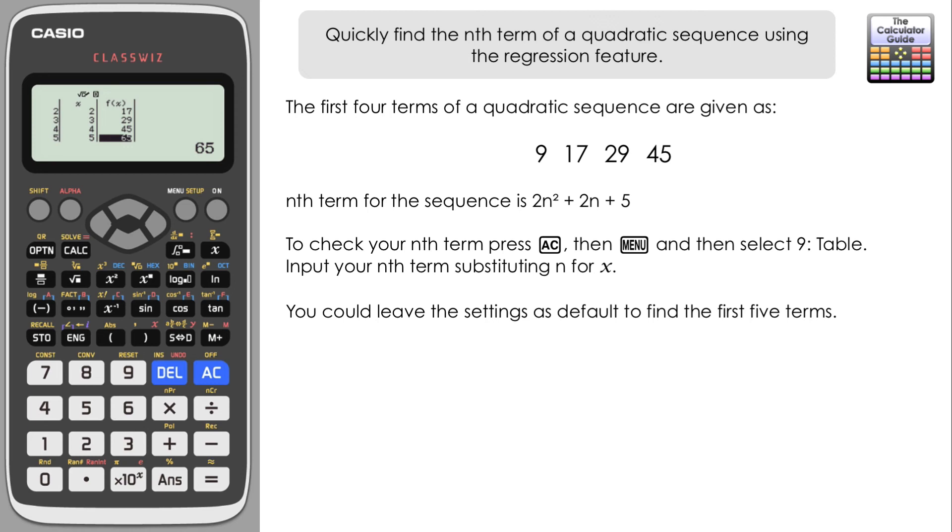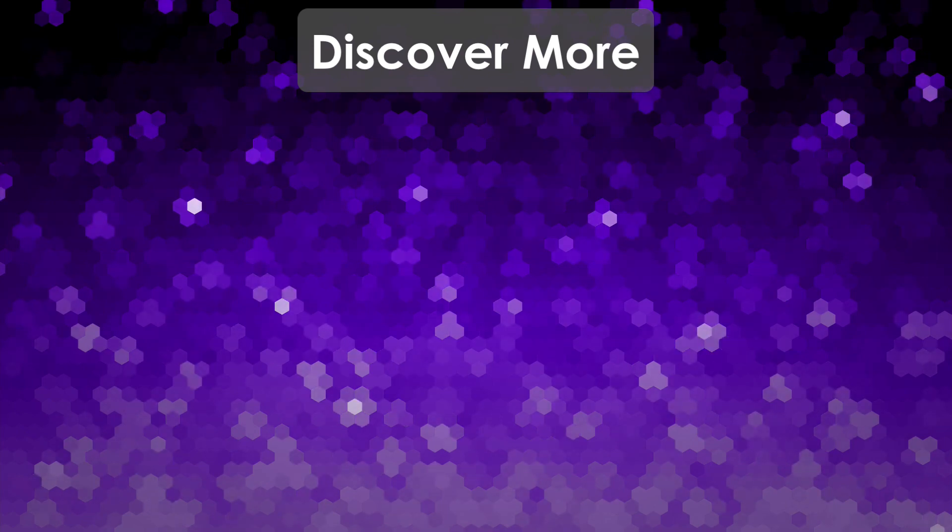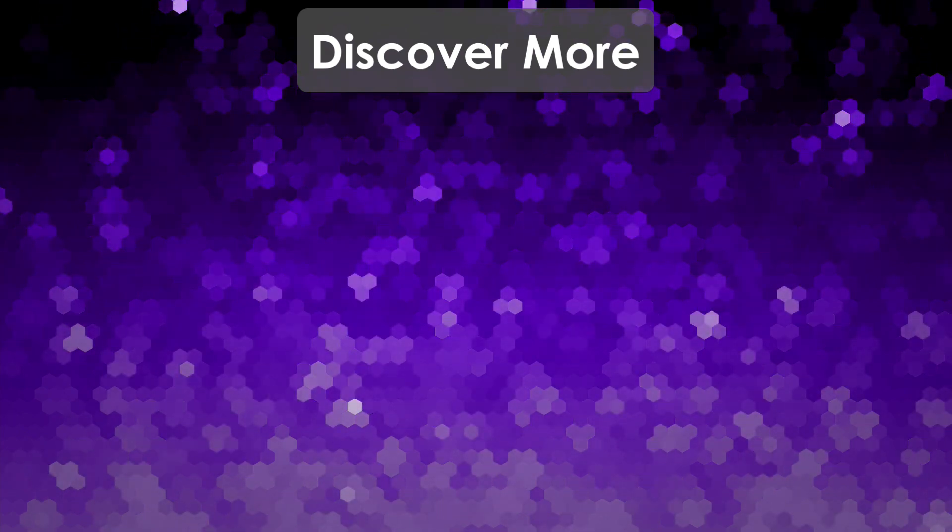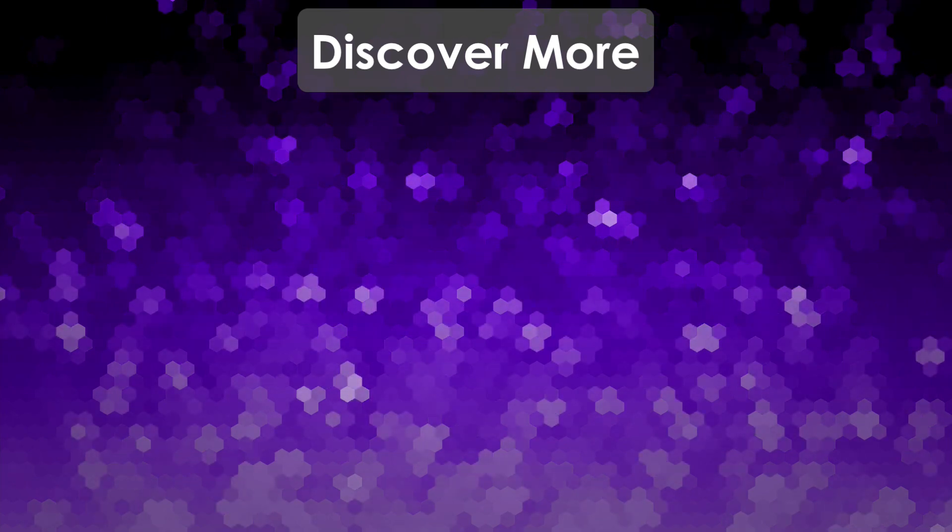So there we go, how to find out the nth term of a quadratic sequence using the regression feature. It's quite a quick method, probably even quicker than the simultaneous equation solver method. However, do remember that it is a little bit of a hack, so therefore you just got to be careful if you're in an exam situation. Make sure you put all your full working out and perhaps just use this method as a check that you've got the right result. But that's it for this video. Thank you very much for watching, and I will see you next time on the calculator guide.